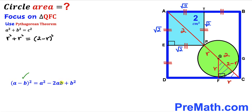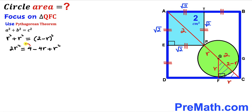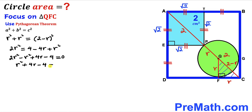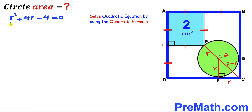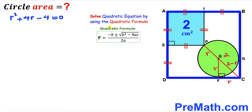So therefore we can write r² + r² = (2 − r)². Let's recall the identity (a − b)² = a² − 2ab + b². Applying it to the right-hand side and combining like terms gives us 2r² = 4 − 4r + r². Moving all terms to the left-hand side and simplifying gives us r² + 4r − 4 = 0. We have ended up with this quadratic equation, which we will solve using the quadratic formula.